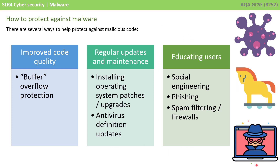So how do we protect against malware in all its various forms? Well, there are several ways. One is simply improved code quality — for the exam, this means when someone originally writes code, they go to the extra effort of making sure that code is robust. Another is regular updates and maintenance. You should always be installing operating system patches and upgrades, and this is especially true if you have any antivirus software installed — make sure to update it regularly so it can protect your computer from the latest viruses.